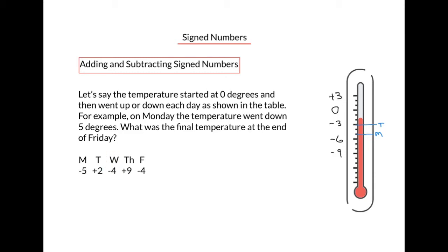On Wednesday, the temperature went down 4 degrees, so we start at minus 3 and go down 4 places. At the end of Wednesday, the temperature was minus 7 degrees. On Thursday, the temperature went up 9 degrees, so we start at minus 7 and go up 9 places. At the end of Thursday, the temperature was plus 2 degrees.